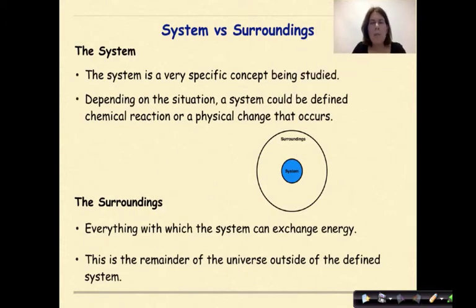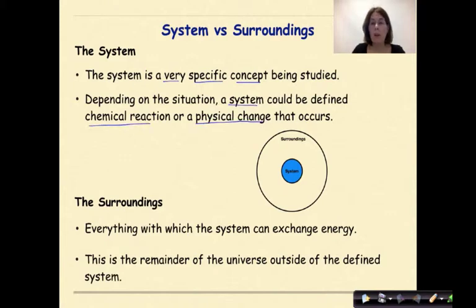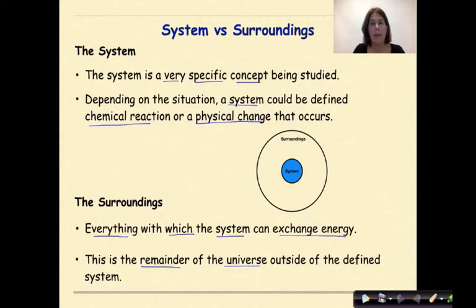What do we mean by the system? The system is a very specific concept that is being studied. Depending on the situation, a system could be defined as a chemical reaction or a physical change that occurs. The surrounding, on the other hand, is everything with which the system can exchange energy.